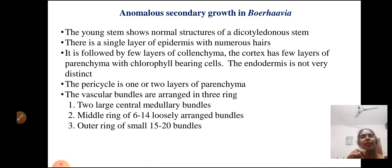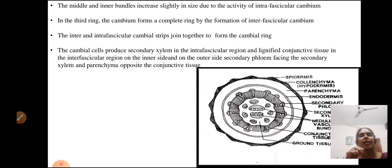The vascular bundles are arranged in three rings: the outer, middle, and inner. The inner consists of two large central medullary bundles. The middle ring consists of 6 to 14 loosely arranged bundles, and the outer ring of 15 to 20 small bundles. The middle and inner bundles increase slightly in size due to the activity of the intrafascicular cambium. In the third ring, the cambium forms a complete ring by the formation of interfascicular cambium.